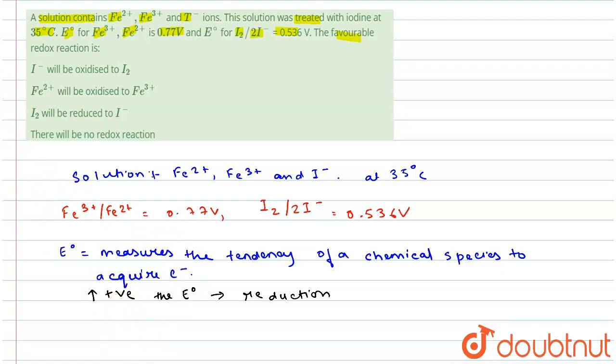So reduction potential for iron is greater than that of iodine. Therefore, iron will get reduced.